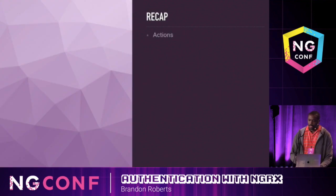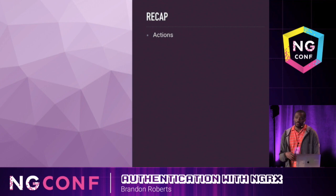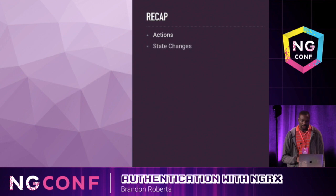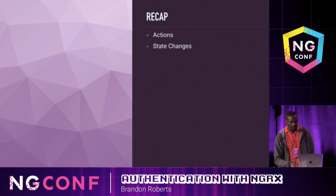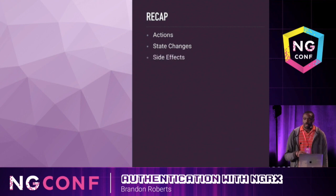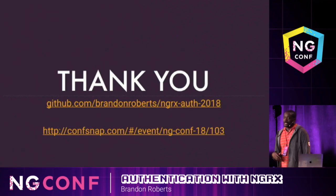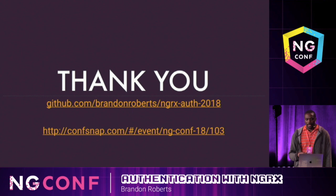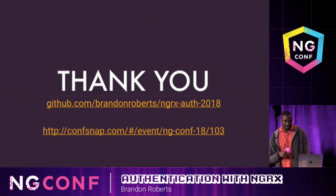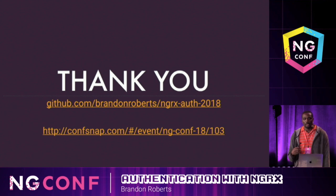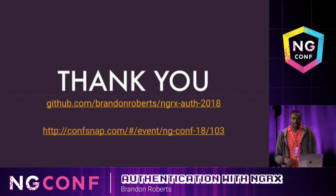To recap, we covered actions, which are unique events that describe interactions; state changes transitioning from one state to another using reducers; side effects for interacting with external resources or backend APIs; and using the router for navigation and additional side effects. You can find a full example of what was demoed today at the repo below, and you can also look at the CompSnap link to find other resources including information about this talk and other talks.